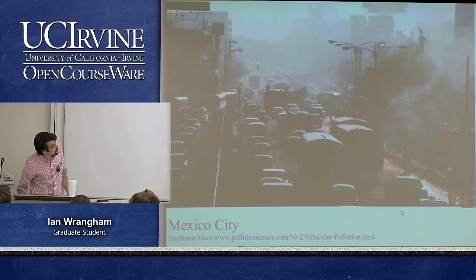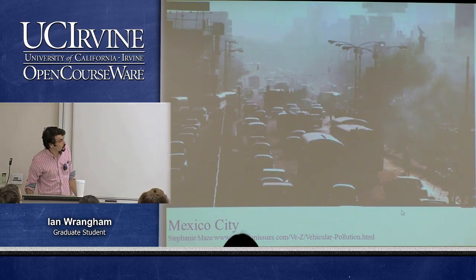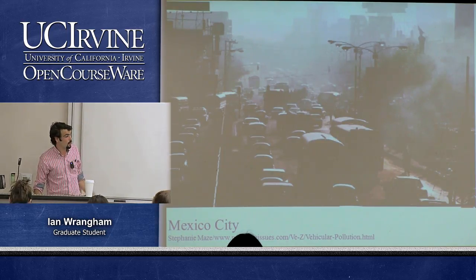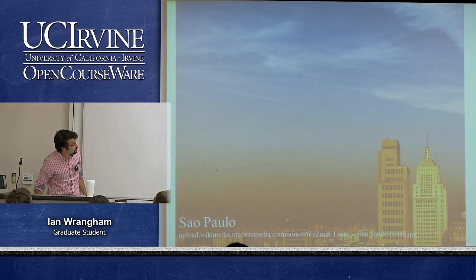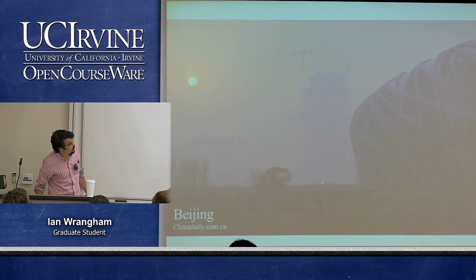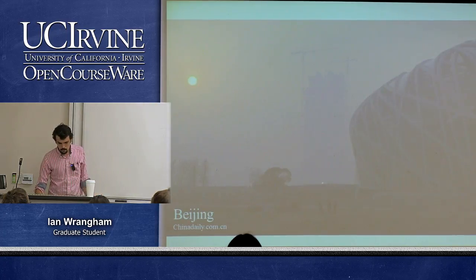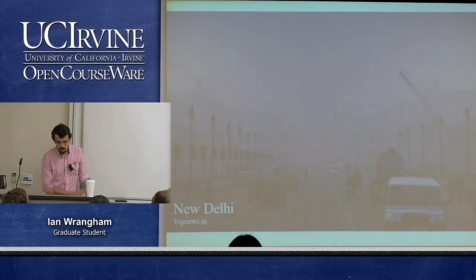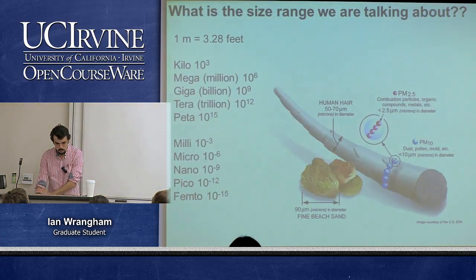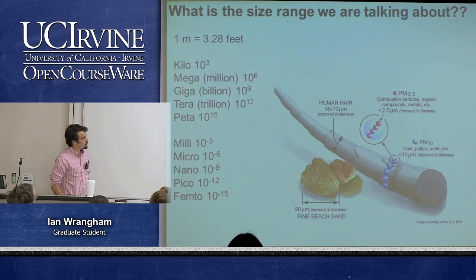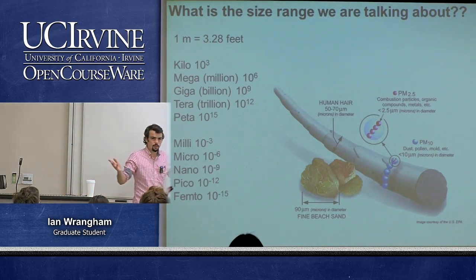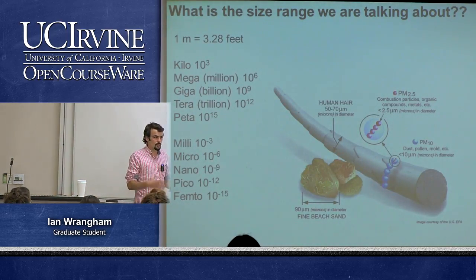This is Mexico City — lots of cars and combustion, so lots of human emission particulates. Also shown: São Paulo, Beijing with the Olympic bird's nest stadium visible, and New Delhi. These are all examples of cities with severe particulate matter pollution.